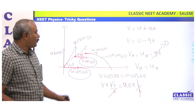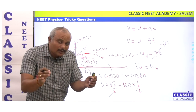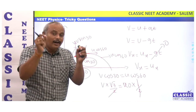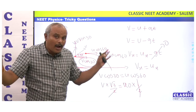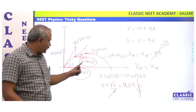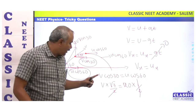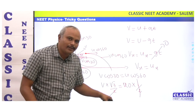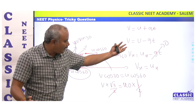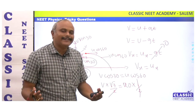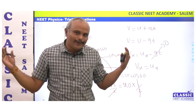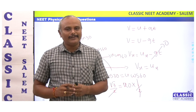The main point is that horizontal velocity is constant throughout the motion of the projectile. When the velocity makes 30 degrees, V cos 30 equals U cos 60, where U cos 60 is the initial horizontal velocity. Solving this gives us our answer.